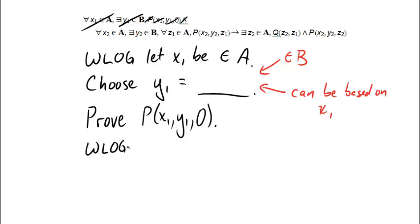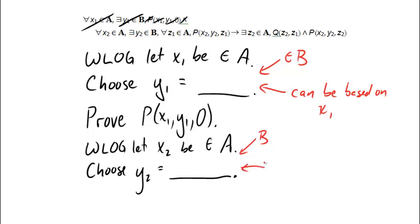And so, we have not gotten to the conditional yet. We're still working on this universal, so we'll say, without loss of generality, let X2 be some arbitrary element of its domain here, A. Then we're going to choose Y2 to be equal to something. And just as above, that happens to be in B, because that's what my quantifier says. And it can be based on... what have we got? X1, Y1, X2... Oh, it can't be based on itself. X1, Y1, and X2. Okay. So I've taken care of the universal with this line. I've taken care of the existential with this line.